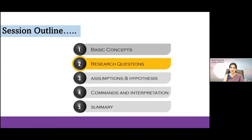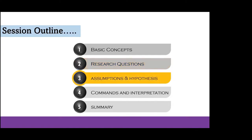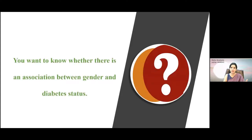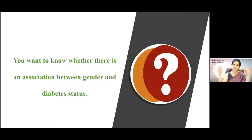The research question — the underlying research question — then what are the assumptions and hypothesis? What are the commands and interpretation? And then at last, I'll summarize the commands. The research question which is important here is that we want to test the association, so we have got two variables. We may have two categories or more than two categories. Depending on that, we make a two-by-two table, two-by-three table, or N-by-C table.